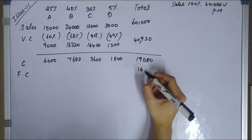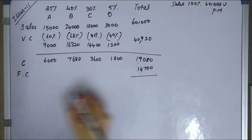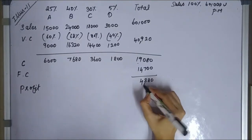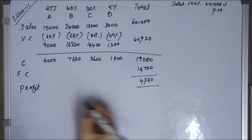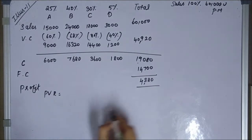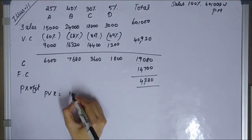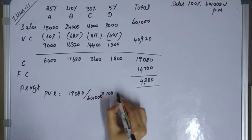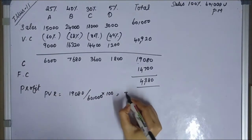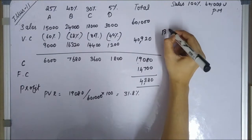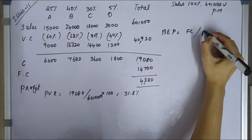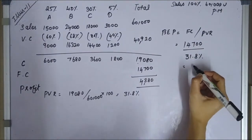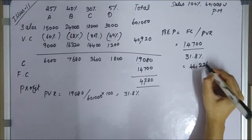Fixed cost is the same at 14,700. This gives a profit of 4,380. Contribution is 19,080. PV ratio = 19,080 ÷ 60,000 × 100 = 31.8%. BEP = fixed cost ÷ PVR = 14,700 ÷ 31.8% = approximately 46,226.